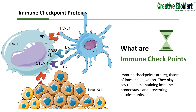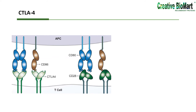After CD28 binds to its ligand on the surface of APCs, T-cell proliferation is activated to enhance immunity. The cytotoxic T lymphocyte antigen-4 (CTLA-4) and programmed death-1 (PD-1) transmit inhibitory signals when bound to their ligands, B7-1 or B7-2, and PD-L1 or PD-L2, respectively, on APCs or tumors. Such protein molecules involved in immune regulation are referred to as immune checkpoints. Immune checkpoint inhibitors were developed to control immune escape by tumors. Checkpoint inhibitors can block inhibitory checkpoints, restoring immune system function.